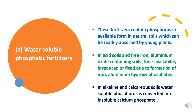Here we will study about the first category — water soluble Phosphatic fertilizers. In neutral soils, Phosphorus is readily absorbed by young plants. In acid soils and soils containing free iron and aluminum oxides, the availability of Phosphorus is reduced due to formation of aluminum and iron hydroxy phosphates. If these fertilizers are used in alkaline and calcareous soil, they are converted into insoluble calcium phosphate.